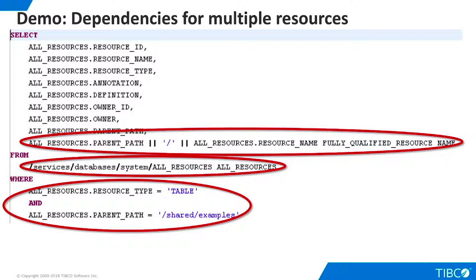We filter all resources so that our view only returns tables from the Shared Examples folder in the TDV namespace. Remember that when TDV views are published, they are exposed as tables, so the TDV system data uses the term table. Our resources, however, are actual TDV virtual views. Finally, we generate a fully qualified resource name column by concatenating the path and name columns for each selected view.